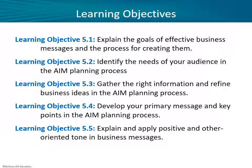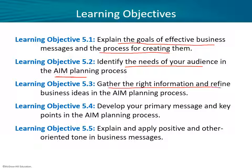Let's take a look at the five learning objectives for this chapter. We're talking about the goals of effective business messages and the process for creating them. How to identify the needs of the audience as part of the AIM planning process — audience analysis, information gathering, and message development. How to gather the right information and the right business ideas in that process. Developing your primary message and key points, and how to explain and apply positive, other-oriented tone in business messages.